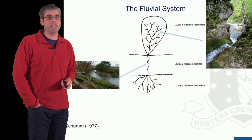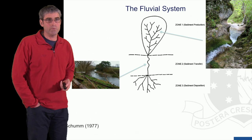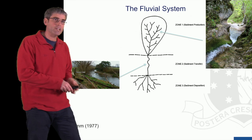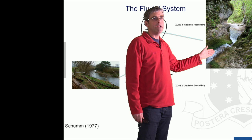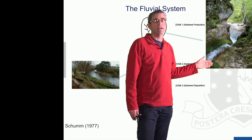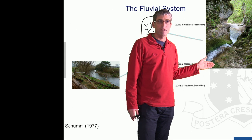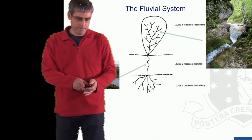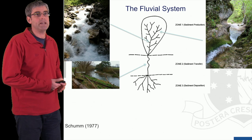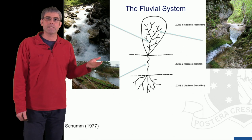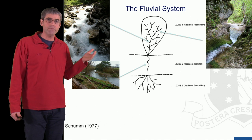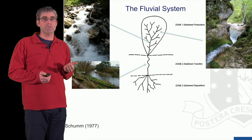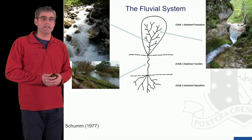Here we have an example of a river reach from Zone 1, the sediment production zone — a bedrock river. If we look at the bed of the channel, we see it is made up of bedrock material, not mobile sediments transported by the river. It's the underlying geology that determines the channel characteristics in that case. Further downstream, within this upland sediment production zone, we can get some mobile sediments delivered from upstream rivers or from the valley walls, but we still also get bedrock in the bed of the channel.